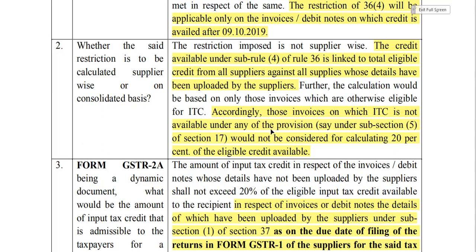Invoices on which ITC is not available under any provision would not be considered for calculating the 20% of eligible credit — this is what the circular has clarified.